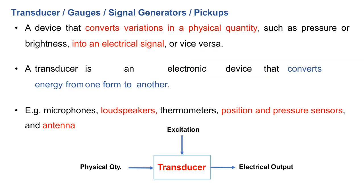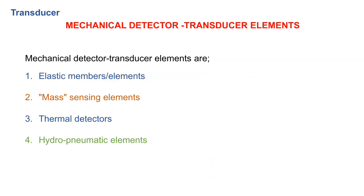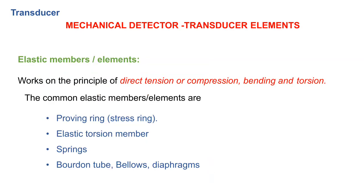Just to glance back at the last session: transducers, which are called gauges, signal generators, or pickups. We defined a transducer as an electric device that converts energy from one form to another. There are transducer elements — maybe an elastic member such as a proving ring, elastic torsion springs, or Bourdon tube.